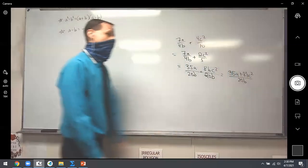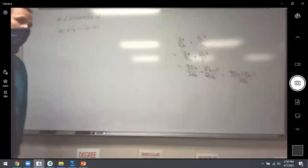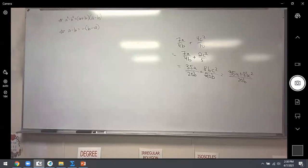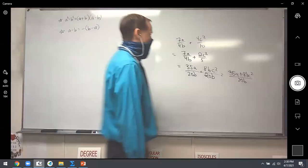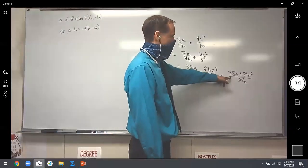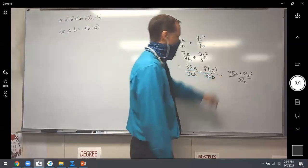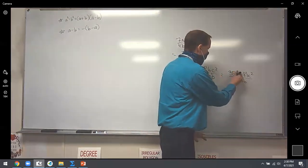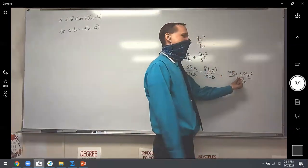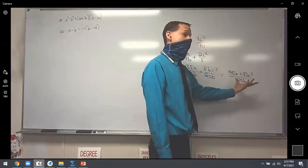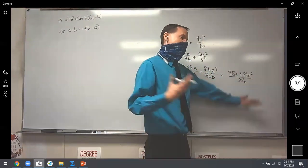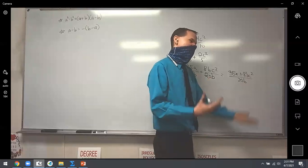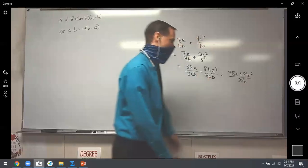Now the bottoms are the same. How do you add fractions? You just add the tops. These aren't like terms so I can't put them together, but I can still write one top plus the other: 35A plus 8BC² all over 20B. And that's the point — do I have a single fraction now? Yes. 35A's and 8BC²'s aren't the same thing, so I can't combine them. Apples and oranges.